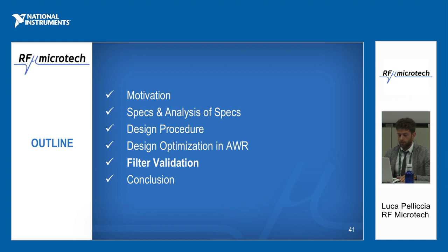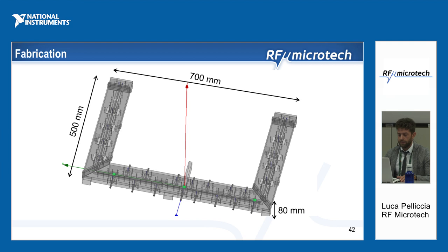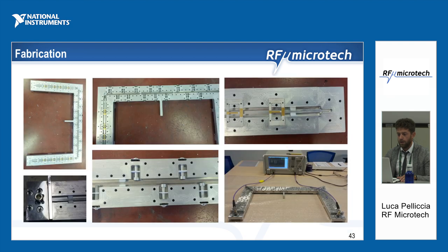After that, we fabricated the device. This is the mechanical design of the structure — you can see the dimensions, which are not small: more than 50 by 50 centimeters for the footprint, but we had no geometrical or physical constraints so this was not an issue. Here you can see pictures of the structure before the final measurement, showing the resonators for the high-frequency filter, the resonators for the lower-frequency filter, the interconnections, the supports for the transmission lines, and the final assembly connected to the vector network analyzer.